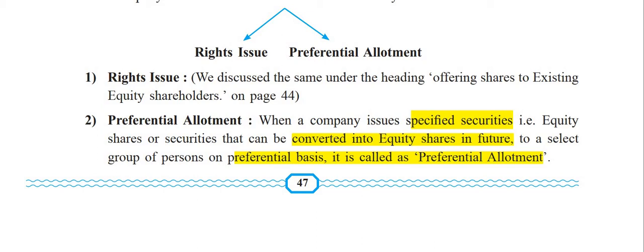Rights issue has already been discussed as one of the methods of issue of shares — that is, offering shares to existing equity shareholders, covered on page number 44. The provisions were also discussed there. In rights issue, shares are given to existing equity shareholders as per their existing proportionate shareholding. For detailed provisions, kindly go to the playlist.